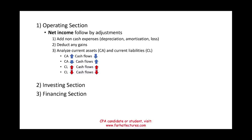Hello and welcome to this session in which we look at a comprehensive example that deals with the statement of cash flows. The statement of cash flows consists of three sections: operating, investing, and financing. For the operating section we're going to be illustrating the indirect method, which starts with net income followed by certain adjustments.